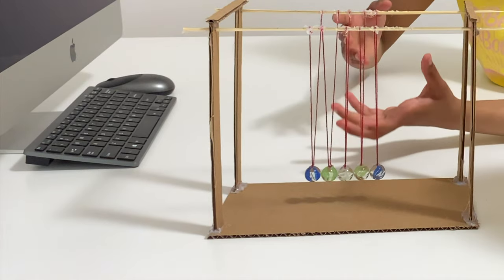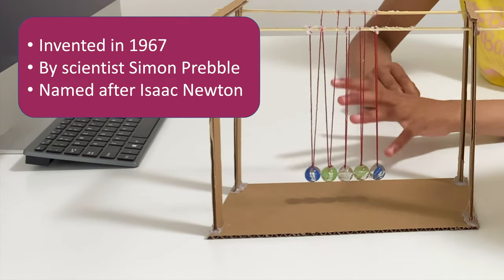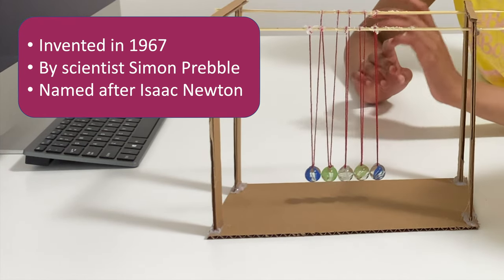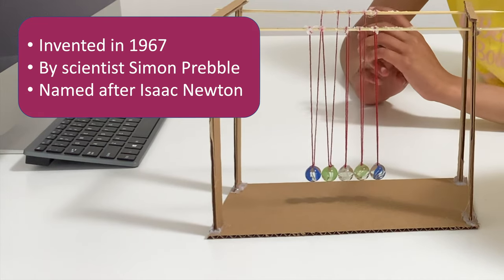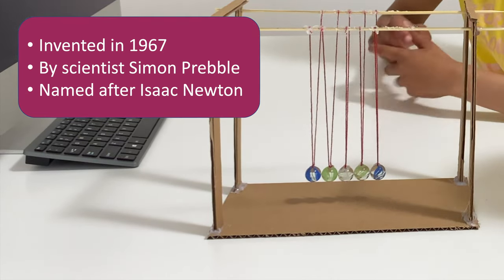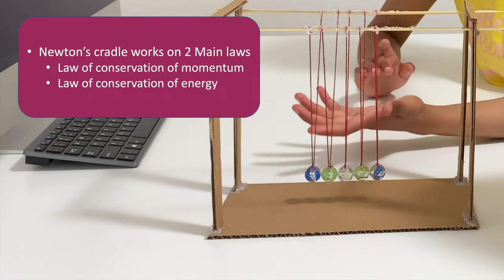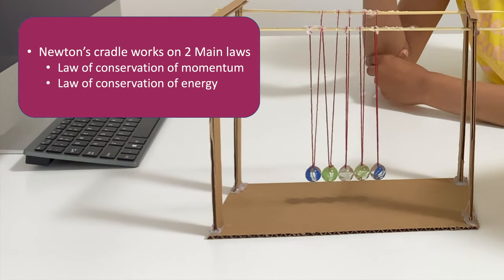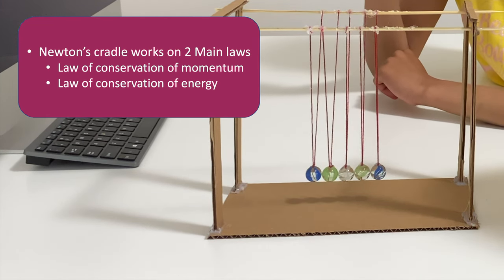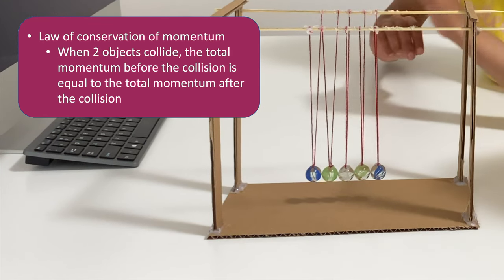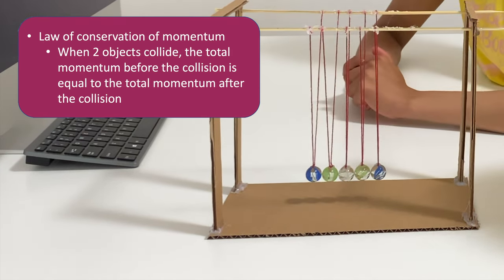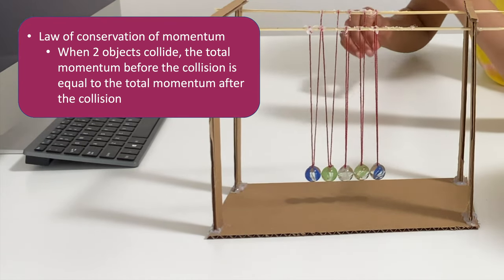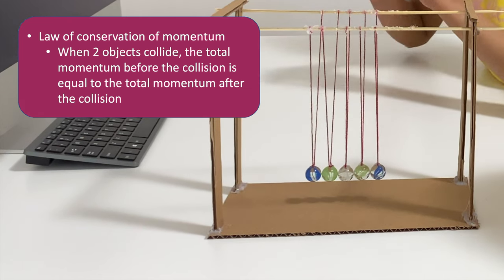So let me tell you why this happens. So first, the Newton's Cradle was invented in 1967 by scientist Simon Preble and was named after the well-known amazing physicist Isaac Newton. So this Newton's Cradle works with two basic laws. The law of conservation of momentum and the law of conservation of energy. So the law of conservation of momentum states that when two objects collide, the total momentum before the collision is equal to the total momentum after the collision.